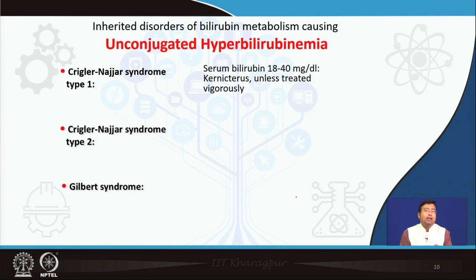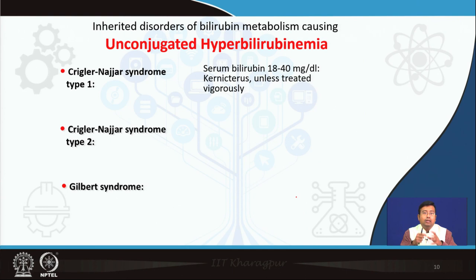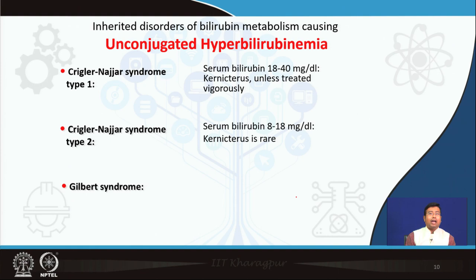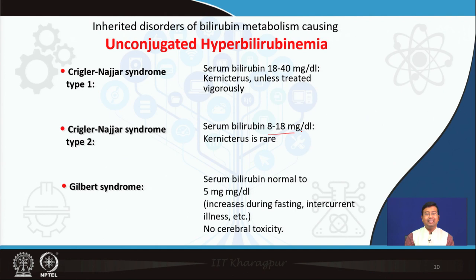In Crigler-Najjar type 1, since there is absolutely no conjugation, unconjugated bilirubin is in excess. Unconjugated bilirubin is insoluble but can bind with albumin and ultimately cross the blood-brain barrier, getting deposited in the brain, leading to kernicterus and ultimately brain damage — the entire central nervous system is coated with bilirubin. In type 2, serum bilirubin is around 8 to 18 mg/dL. In Gilbert syndrome it is around 5 mg/dL. Gilbert syndrome also presents in adults and increases during fasting and intercurrent illness.